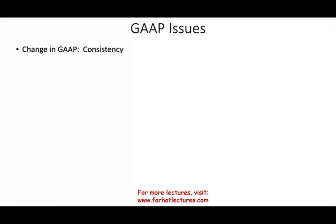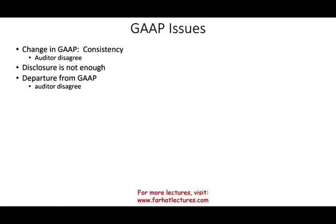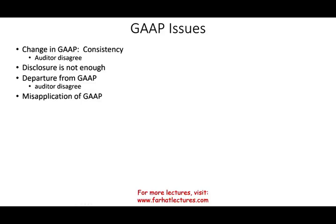What could be some GAAP issues that would force us to give an opinion that's not unmodified? One is a change in GAAP — if we disagree and the client keeps changing their method, then we cannot give an unmodified clean opinion. Also, the client is not disclosing enough information — disclosure is not enough. Or simply put, the client is departing from GAAP entirely. Additionally, there is misapplication of GAAP — you're not using GAAP properly, you are using an unreasonable estimate, and the auditor disagrees.